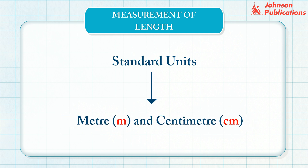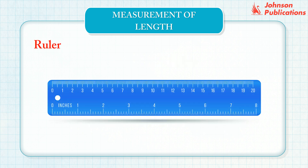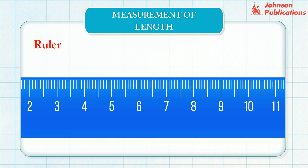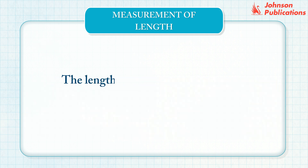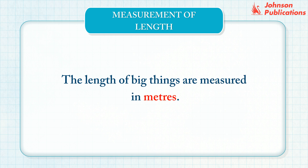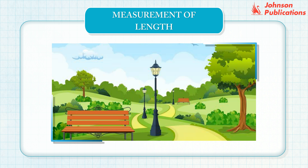Meter and centimeter are standard units of length. A ruler is used to measure the length of shorter objects such as a crayon, toothbrush, etc. One side of a ruler is marked in centimeters. The length of bigger things are measured in meters — for example, the length of a park.